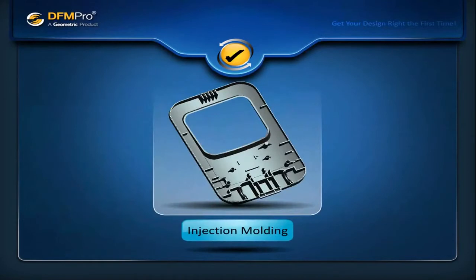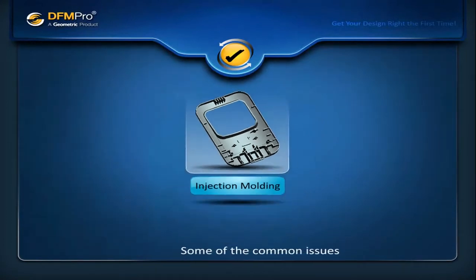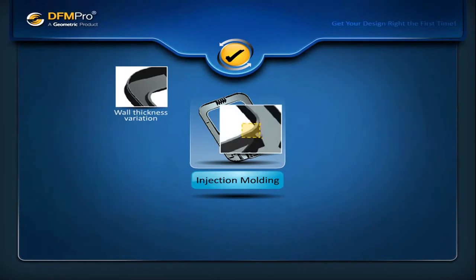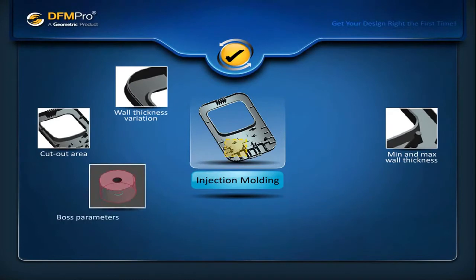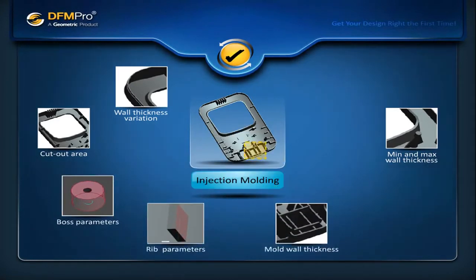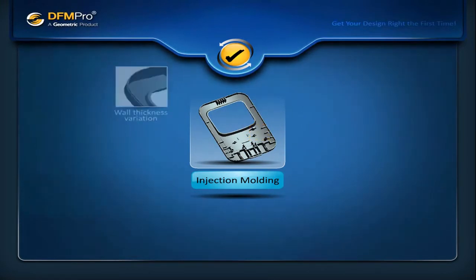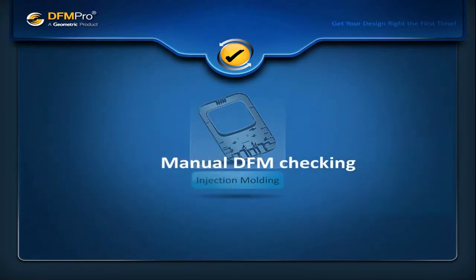Injection molding parts are typically complex and difficult to check manually. Some of the common issues that can be detected for the injection molding process are thickness gradient, minimum and maximum wall thickness, appropriate cut-out areas, design practices for bosses, rib height, detection of thin steel conditions, and appropriate draft angle for core and cavity. By using these manufacturability checks, customers have reported 60% savings in time over manual DFM checking.